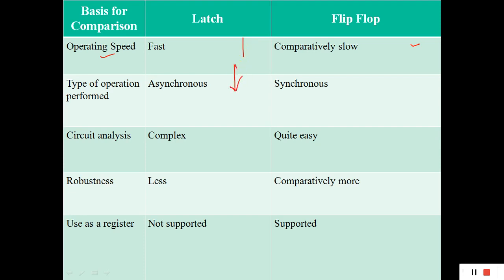Latches are fast because they are asynchronous in nature — they do not need to wait for a clock to change the outputs. Flip-flops are slower because output changes only when the clock pulse is applied. Circuit analysis for latches is somewhat complex, while flip-flops are quite straightforward. Latches are less robust because they can become unstable in asynchronous mode, while flip-flops are comparatively more stable since output occurs only on the presence of the clock.